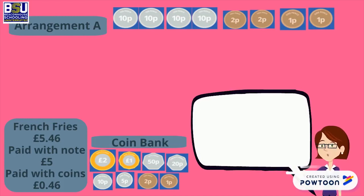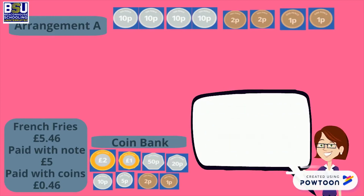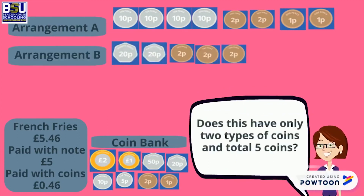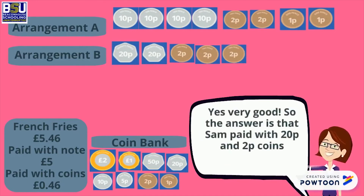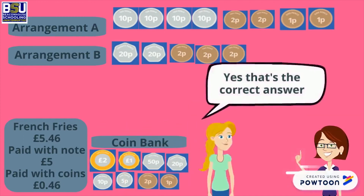So we will have to make another arrangement — arrangement B — with 20-pence and 2-pence coins. Does this have only two types of coins and a total of 5 coins? Yes, very good! So the answer is that Sam paid with 20-pence and 2-pence coins. Yes, that's the correct answer!